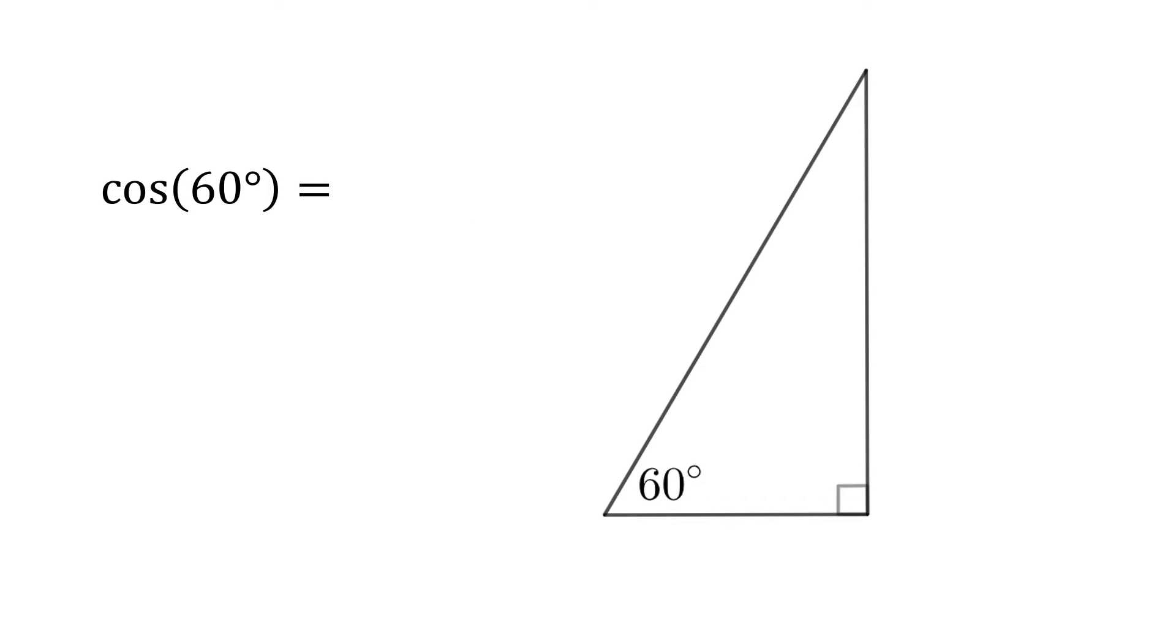Now for cosine 60 degrees, again we need a 60 degree angle and a right angle, so the other angle must be 30 degrees. Now what we have is half an equilateral triangle. Let's call the hypotenuse 2, because we need to halve it for the base, so that's 1. Now using the Pythagorean theorem again, the longer leg is square root 3.